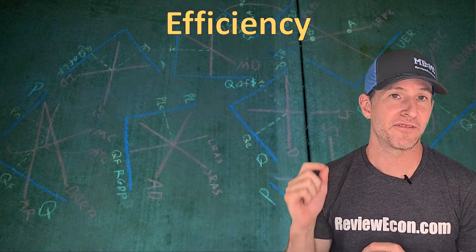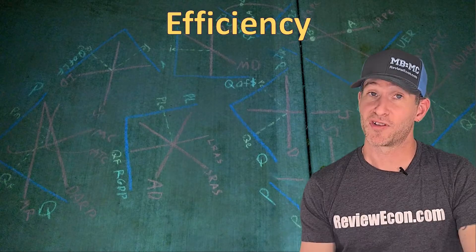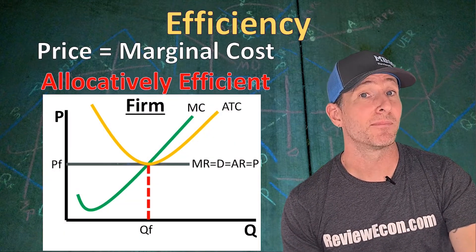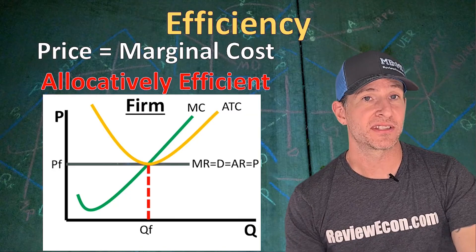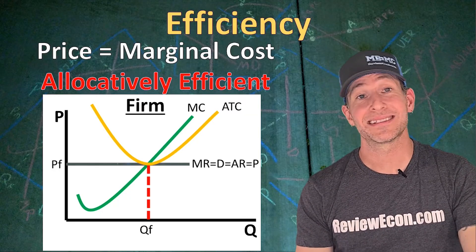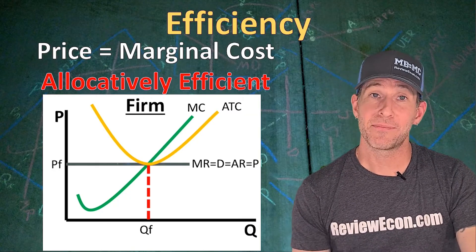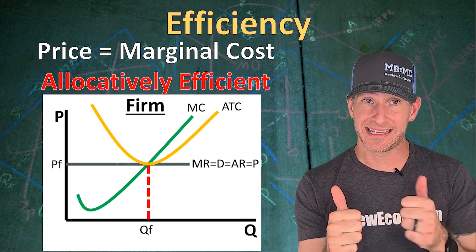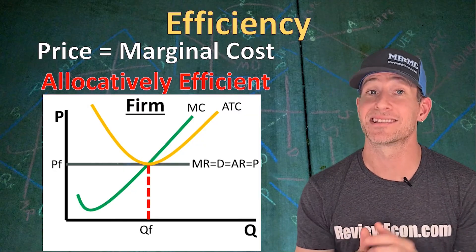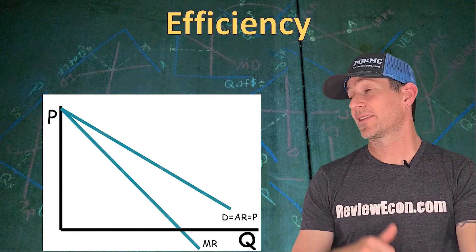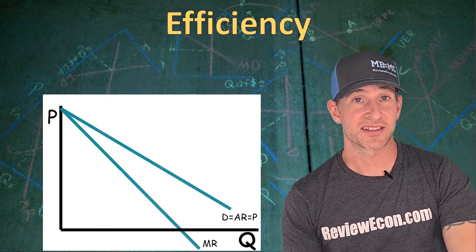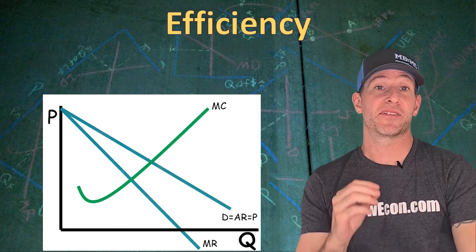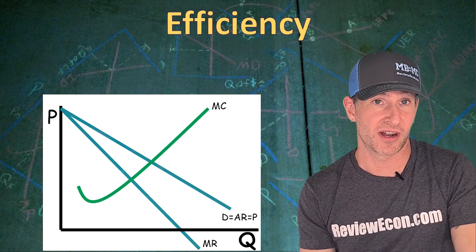Next, we're going to talk about efficiency for imperfectly competitive markets. Perfectly competitive firms price at marginal cost — they produce where MR equals MC, and at that quantity the price equals the marginal cost, making them allocatively efficient. They're producing where marginal cost equals marginal benefit, and the marginal benefit is the demand curve. Now, if we take that demand and marginal revenue curve and add in the marginal cost curve from Unit 3, we can determine if an imperfectly competitive firm is going to be efficient.